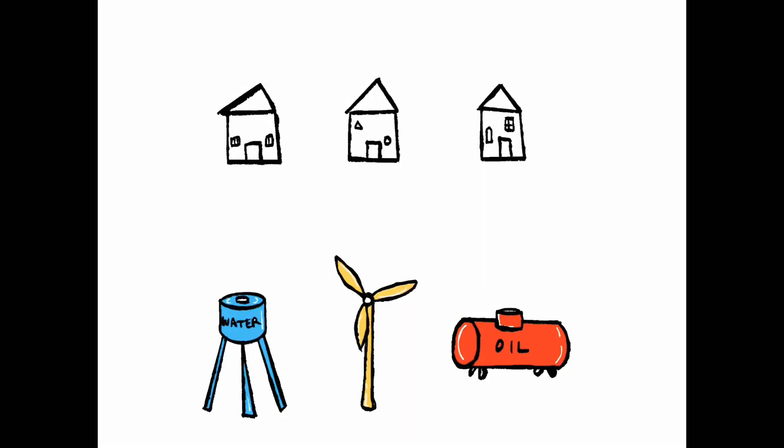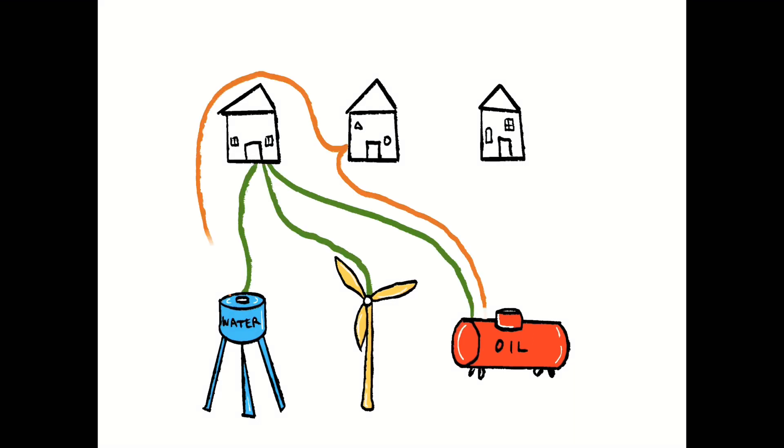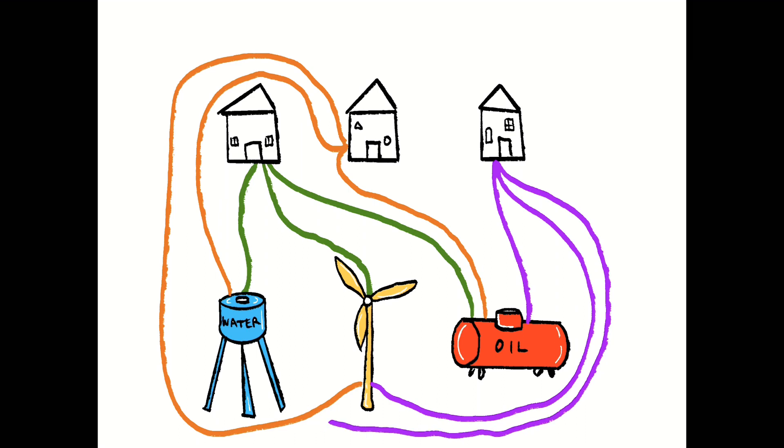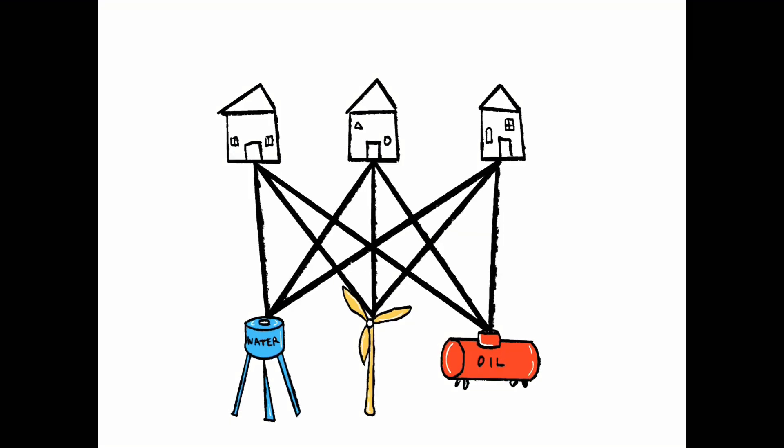Known as the utility problem, the setup consists of three houses that all need to be connected to electric, gas, and water plants. The lines to connect these houses to the utilities cannot cross on a 2D plane. It quickly becomes apparent that it is impossible to do this. This is because we are trying to form a non-planar graph on a plane.